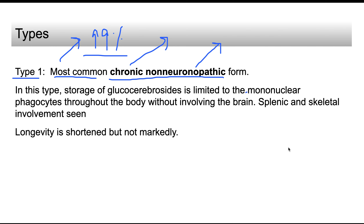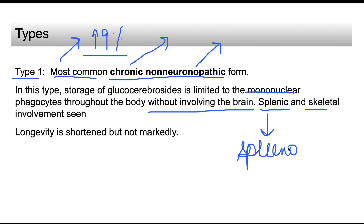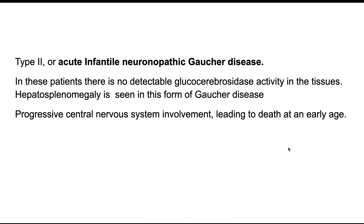In Type 1, storage of glucocerebrosides is limited to the mononuclear phagocytes and does not involve the brain. The spleen is involved, presenting with splenomegaly, and skeletal involvement is also present. Glucocerebrosidase levels are low but not undetectable. Because it is non-neuropathic, the person's longevity is shortened but death occurs late.